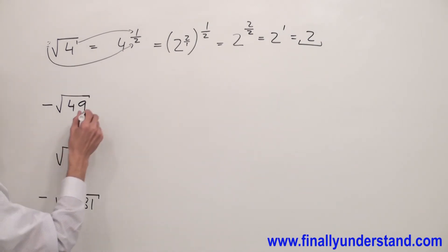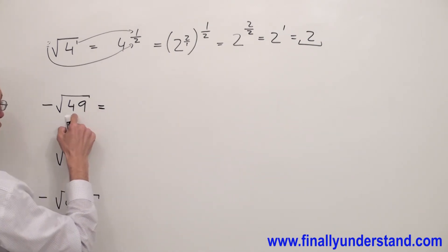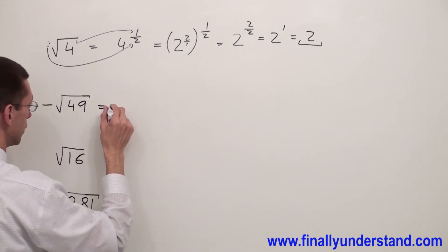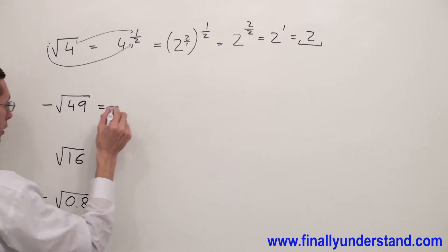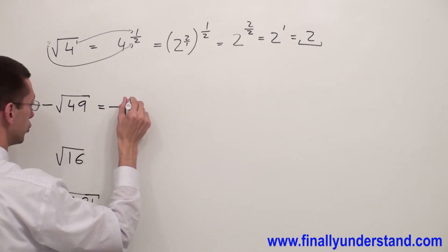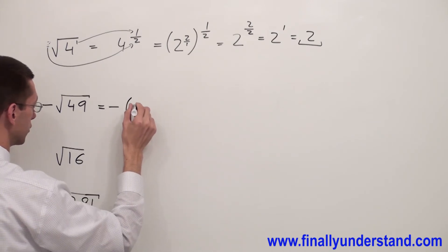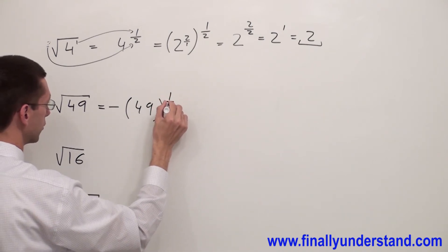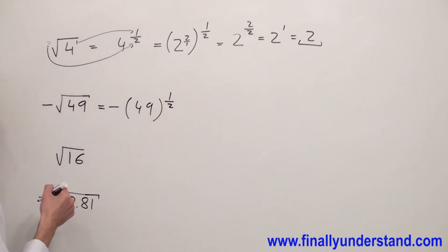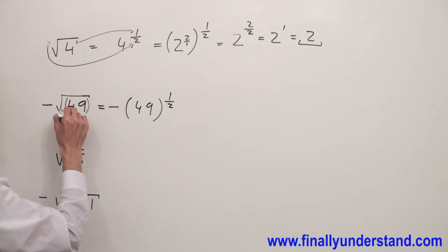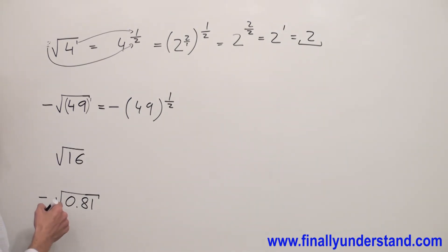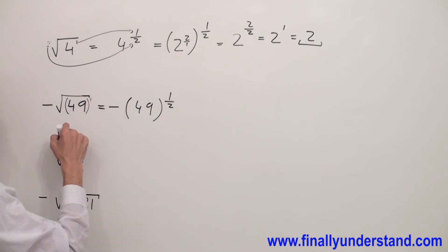Now let's take a look at this example. I have negative square root of 49. My negative sign is going to stay. The radical I'm going to convert to the exponential form, so I'm going to have 49 to power 1 half. Someone might ask why I have 1 half. Remember, next to 49 — and next to any number or any variable — there is always an exponent of 1 if there is no exponent written.